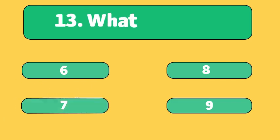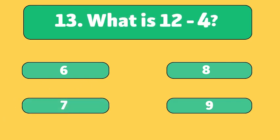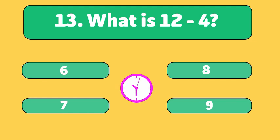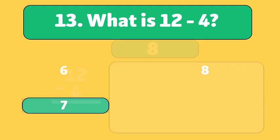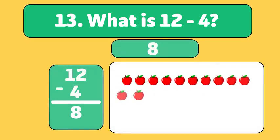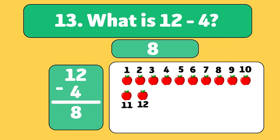What is 12 minus 4? The answer is 8. We start with 12 apples and take away 4. Let's count: 1, 2, 3, 4. We have 8 apples now.